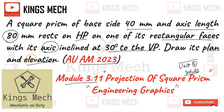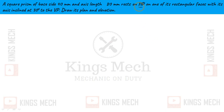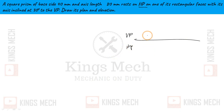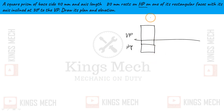At first glance the question looks a bit difficult, but practically it is not that hard. Let us go to the solution. For a square prism on HP, as usual, we draw VP and HP and put a rough diagram first — that will be helpful.